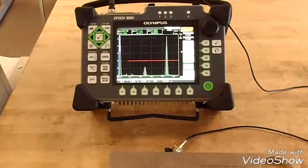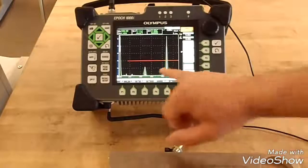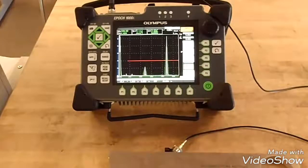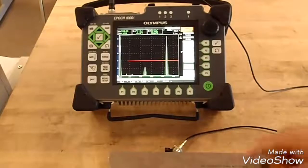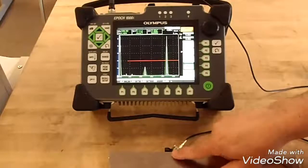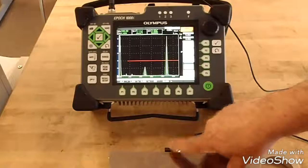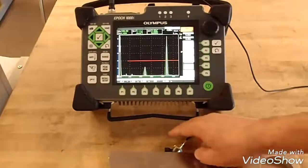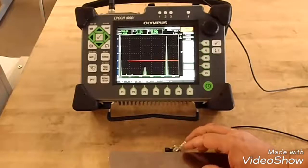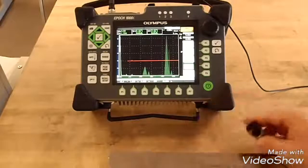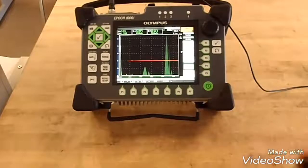That right there is your beam index point where the maximum energy is being received. Compare that to the zero on the block to the zero on your wedge. That is your beam index point.